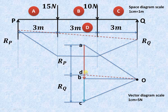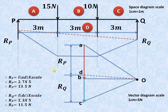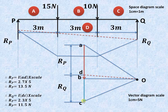We measure the length AD, which comes out to be nearly 2.7 cm, and multiply by the scale of 5 N per cm. So 2.7 into 5 equals 13.5 N — the reaction at point P is 13.5 N. Similarly, measuring length DC gives 2.3 cm multiplied by 5 N, giving 11.5 N. In this way, we can find out graphically the reactions at P and Q, that is RP and RQ respectively.